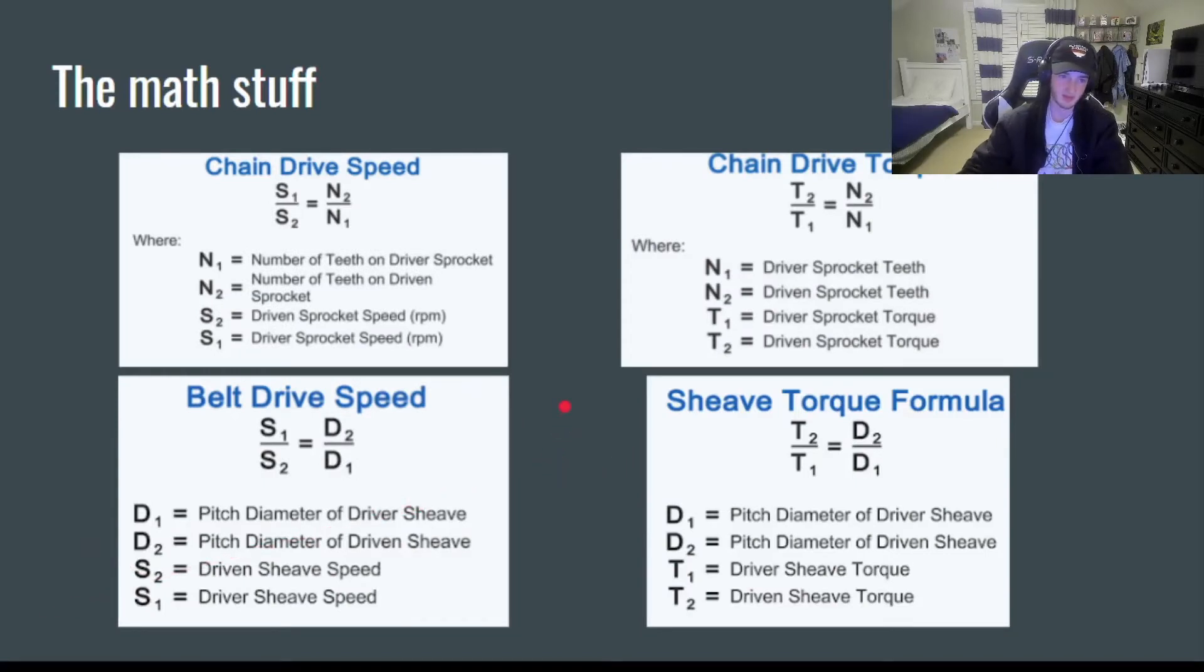To wrap up all the math stuff here, we have these four equations, and they're all very similar. These equations are used to calculate the speed in rotations per minute or RPM and torque in foot pounds.